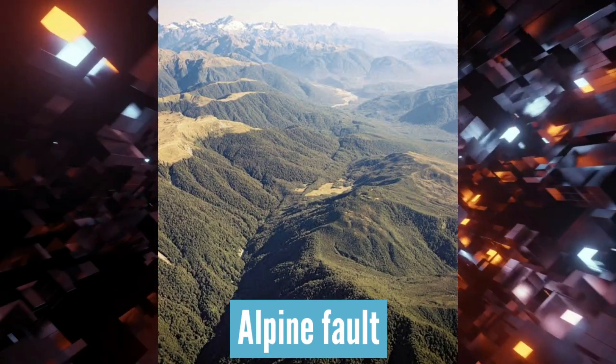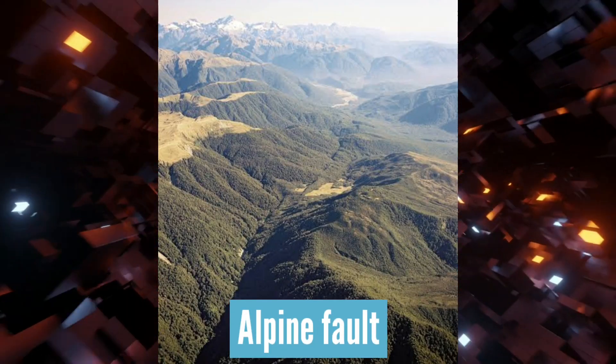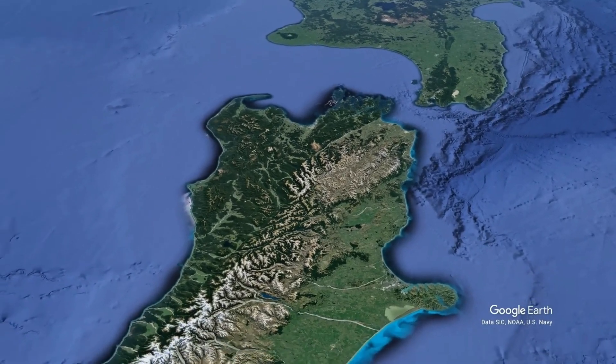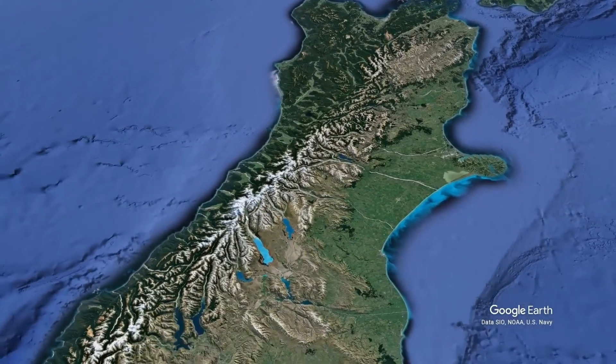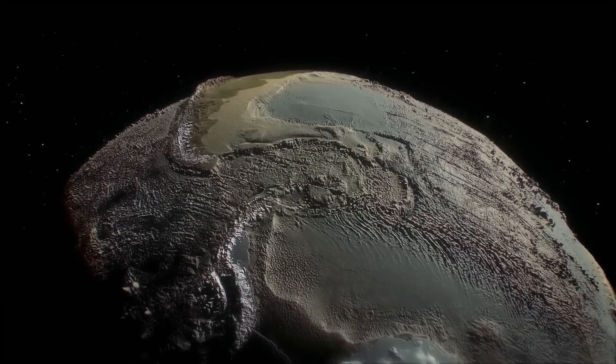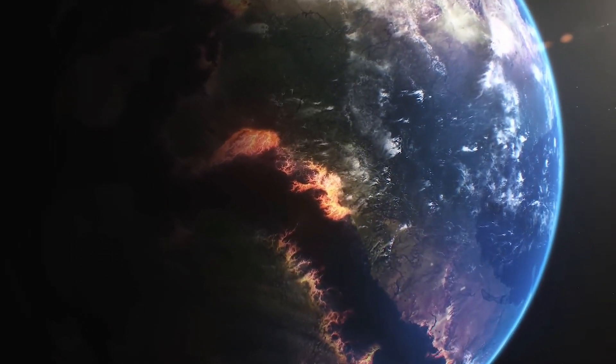One of them is the Alpine Fault, a plate boundary that runs along the South Island and is so significant that it can be seen from space. The second is that the geology of both New Zealand and the entire continent is strangely bent.